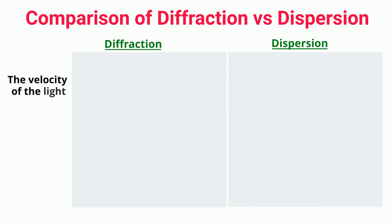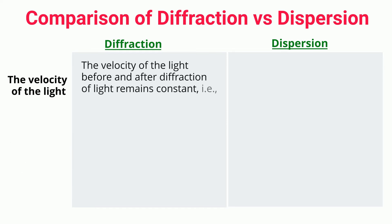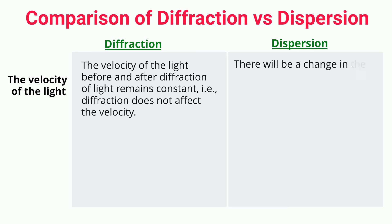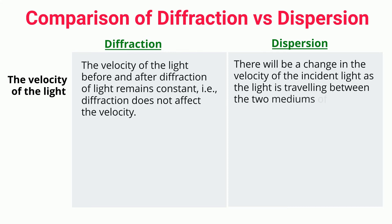The velocity of light: The velocity of light before and after diffraction remains constant, i.e., diffraction does not affect the velocity. There will be a change in the velocity of the incident light as the light travels between two mediums of different refractive indices.